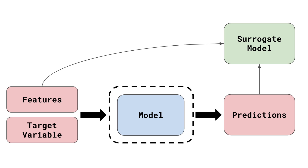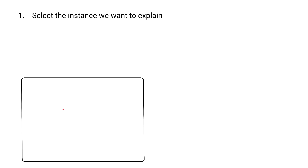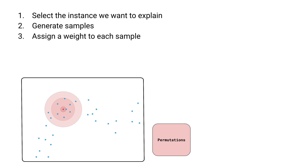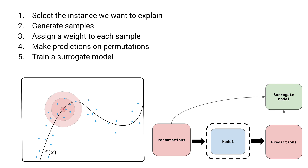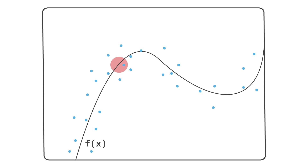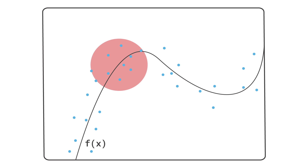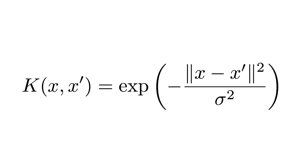It does this by building simple surrogate models around the black box model's predictions for an individual instance. I'm going to give the general steps taken by LIME to get local interpretations, and discuss in detail some of the choices related to these steps, including how to weight features and which surrogate model to use. At first, these choices may seem like a good thing, but it leads to the biggest weakness for this model.